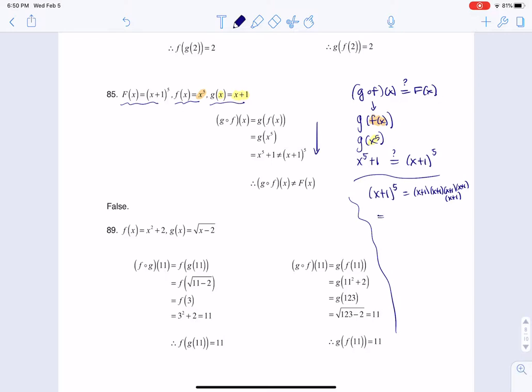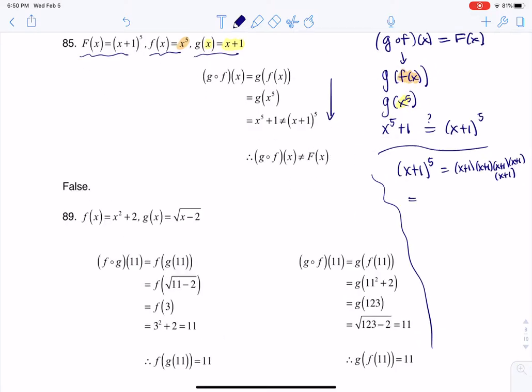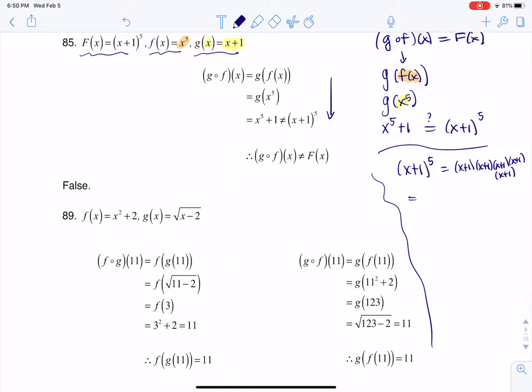Now, I want you to imagine trying to foil these. So let me actually expand that. So let me just do the first two, right? This would be x squared plus 2x plus one. I could do the next two: x squared plus 2x plus one. And then I still have an x plus one left over.